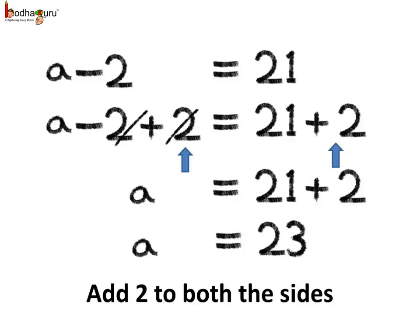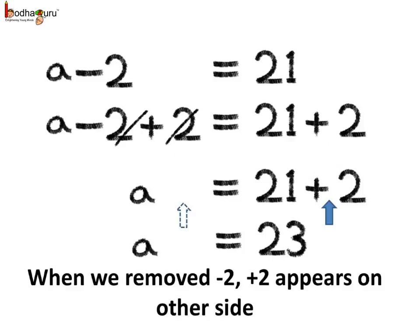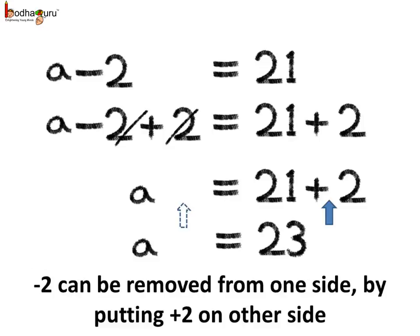When we added 2 to both the sides of the equation, it disappeared from the left hand side, but it appeared on the right hand side as plus 2. So we see minus 2 can be removed from one side by putting plus 2 on the other side of the equation.